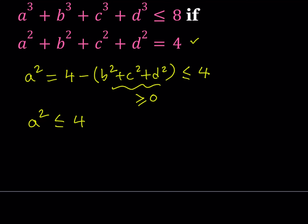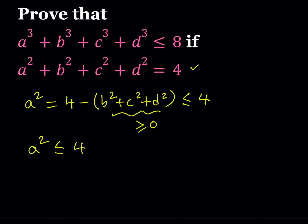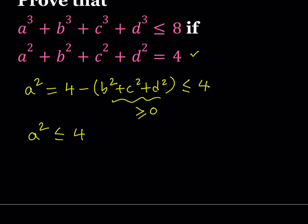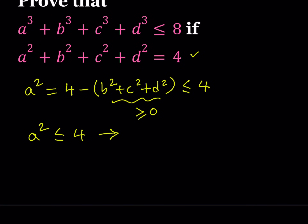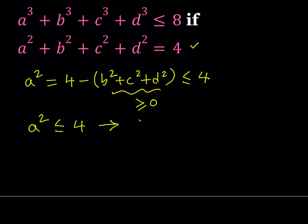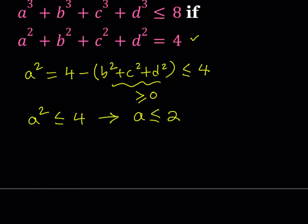We need to use this information and turn it into a cube, because we want to show that the sum of the cubes is less than or equal to 8. If a squared is less than or equal to 4, then a is less than or equal to 2. So I'll subtract 2 from both sides and write this as a minus 2 is less than or equal to 0. This is true for b minus 2, c minus 2, and d minus 2 as well — it's always going to be less than or equal to 0.